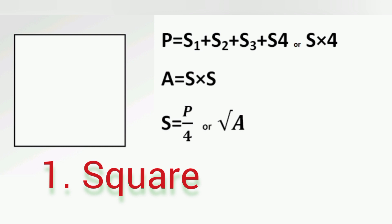Area of square is equal to side times side. Apart from perimeter and area, you can also find the side. Side is equal to perimeter over 4, or square root of area.